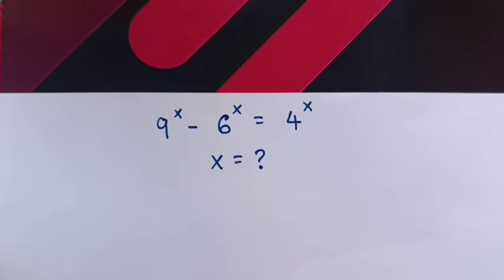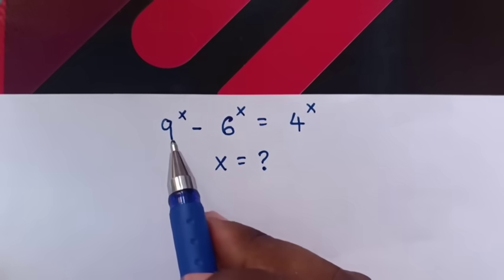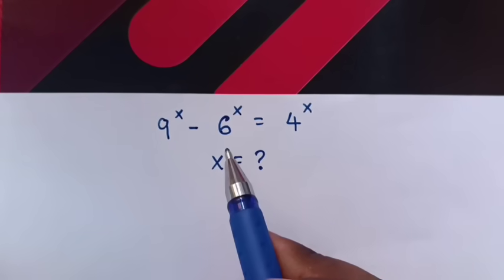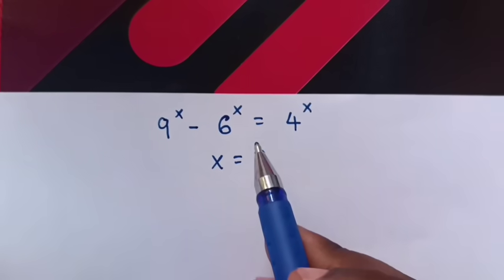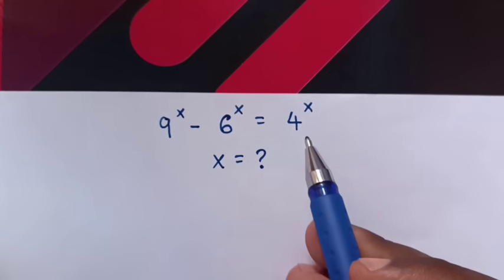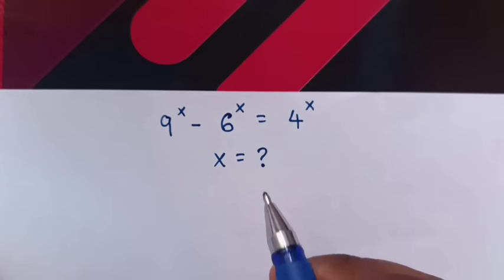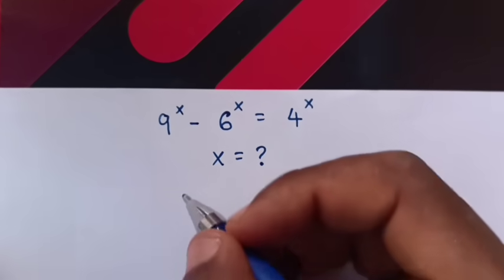How to solve this exponential equation: 9 power x minus 6 power x is equals to 4 power x, to find the value of x.